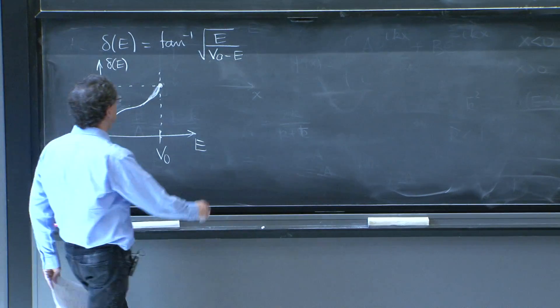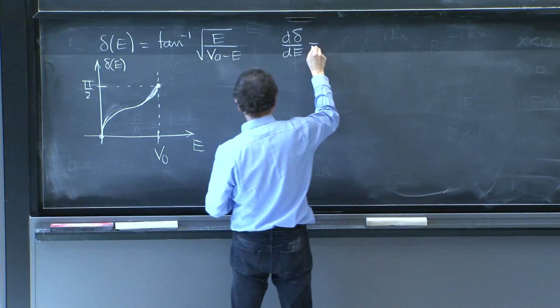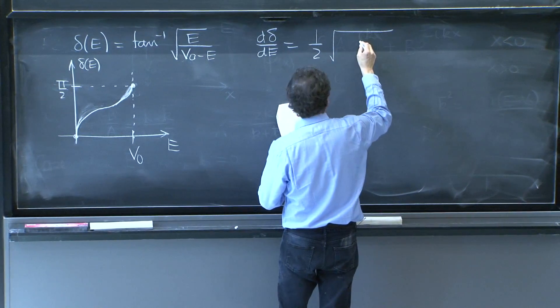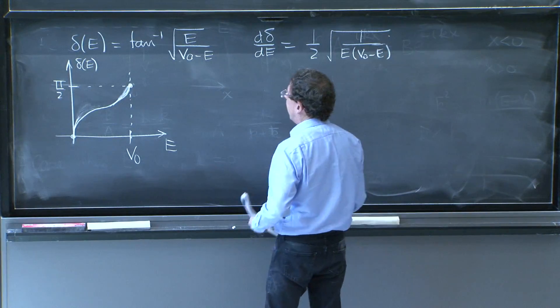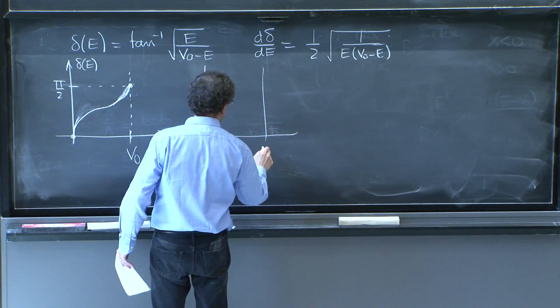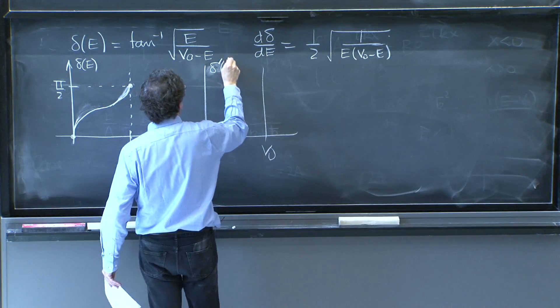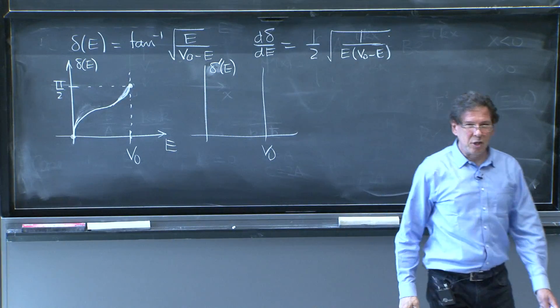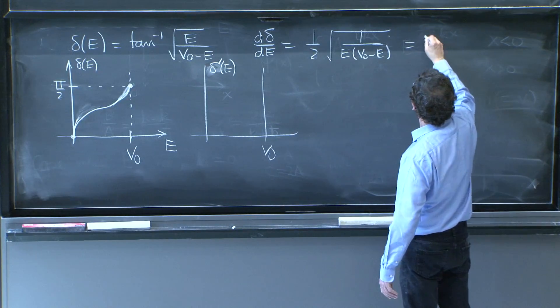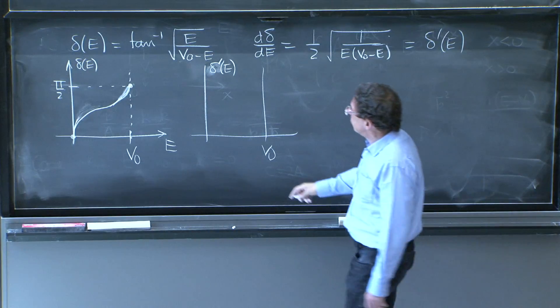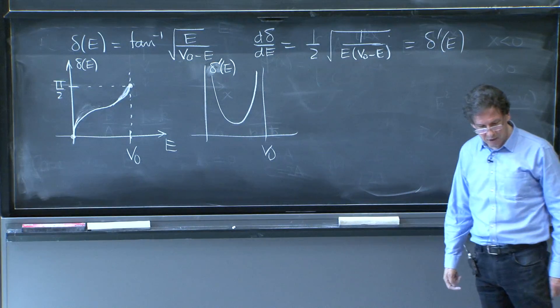In fact, it's kind of interesting to plot the derivative dδ/de. A little calculation will give you this expression. Or you could do this with Mathematica or v0 minus e. And shows, in fact, that here is v0, and here is dδ/de. We could call it δ'(e), because we wrote the phase shift as a function of the energy. So dδ/de is really δ'(e). And the sort of infinite goes to a minimum and infinite again in that direction. That's how it behaves.